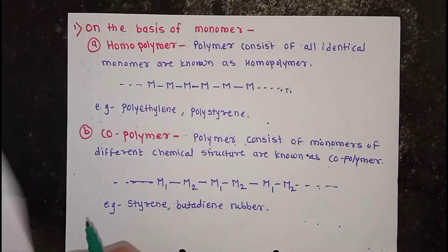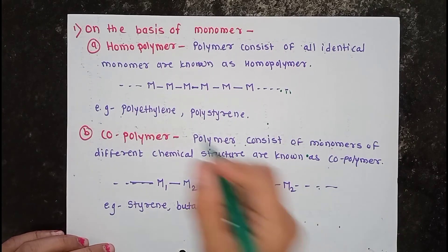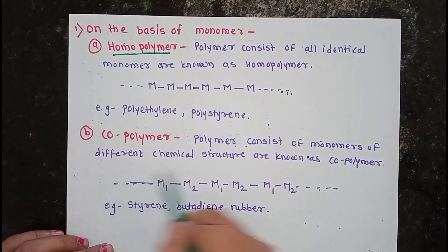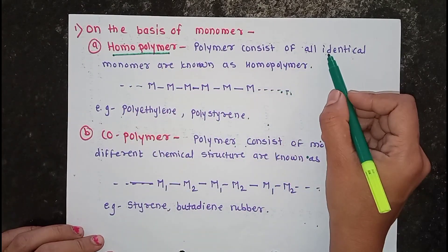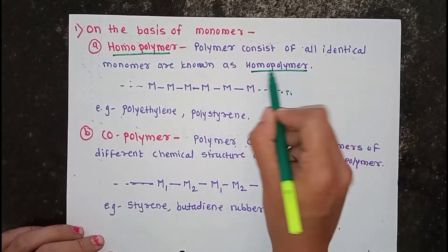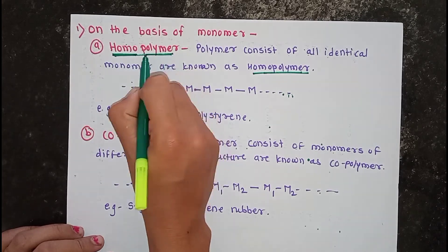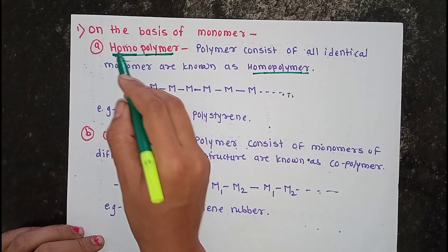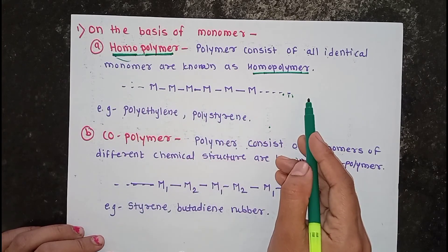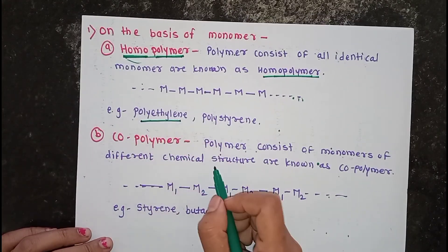Firstly, on the basis of monomers, polymers are classified into two types: homopolymers and copolymers. A homopolymer is a polymer which consists of all identical monomers. The word 'homo' means same — so identical or same monomer units are repeated in the structure of the polymer, producing a homopolymer. For example, polyethylene is a homopolymer.